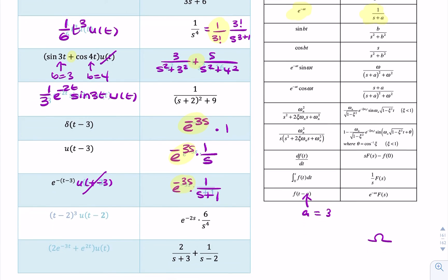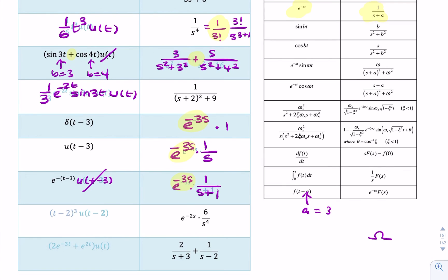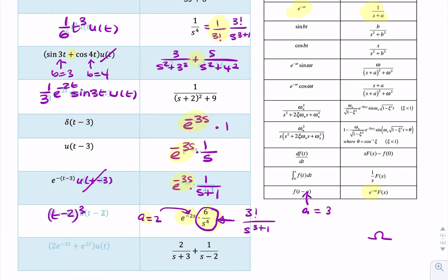In the next example we have 6/s⁴ multiplied by e^(−2s). We immediately identify the e^(−as) factor as a delay by 2 seconds. The term 6/s⁴ matches 3!/s^(3+1), giving t³ in the time domain. Because it's shifted by 2 seconds, it becomes (t−2)³. We include a shifted unit step, so the answer is (t−2)³·U(t−2).